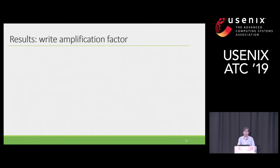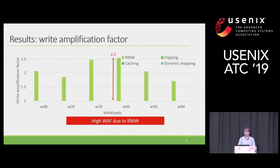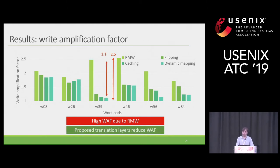Here we see selected results for write amplification factor. For comparison, a conventional drive has a write amplification factor of one. Read-modify-write imposes a lot of overhead — up to 2.5 in the worst case. However, by using our algorithms — track flipping, track caching, and dynamic track mapping — we could reduce the write amplification factor to 1.1, which is very close to a conventional drive, for the case W39 in the figure.